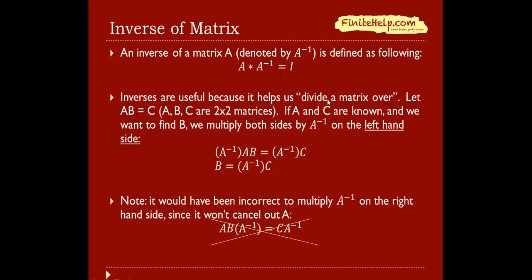Inverses are useful because it helps us divide a matrix over. So let's say AB equals C. AB and C are all 2x2 matrices. If A and C are known, and we want to find B, we can sort of divide A over by multiplying both sides by A inverse.